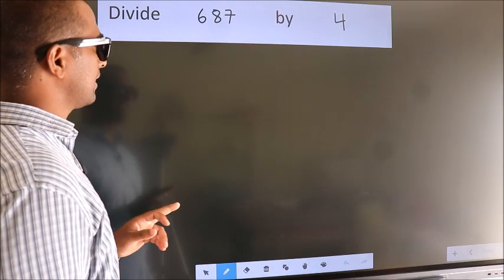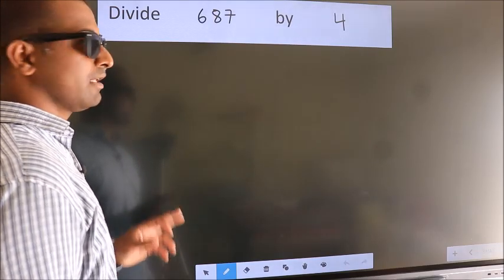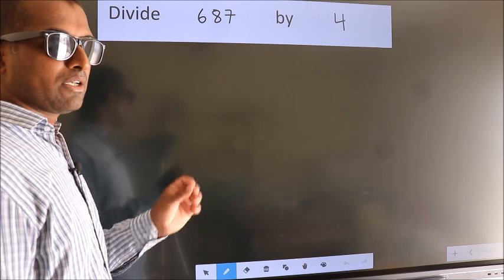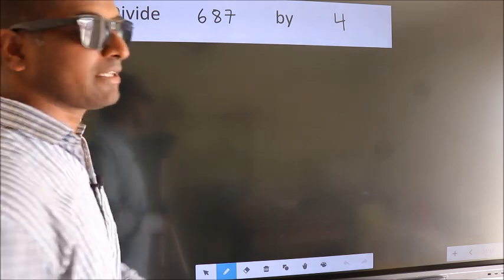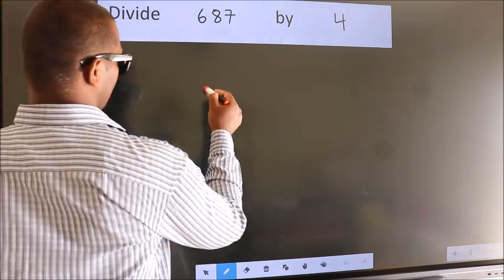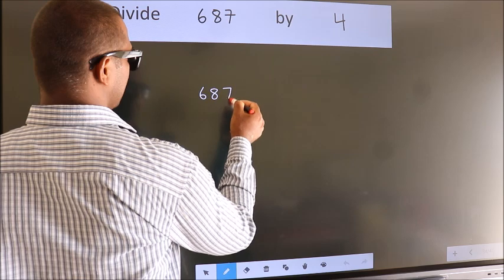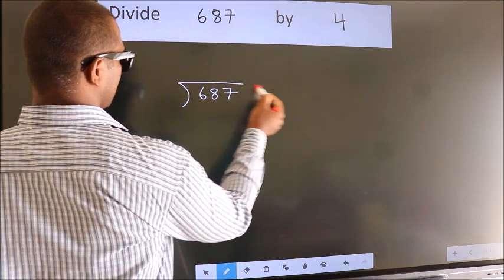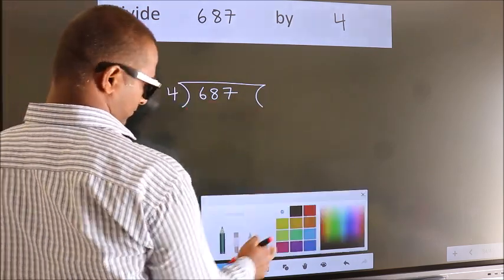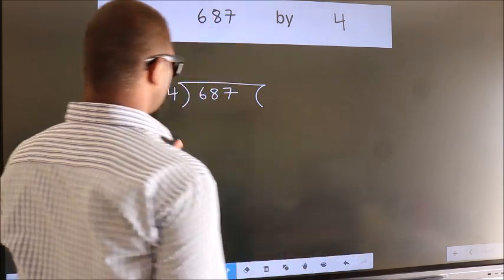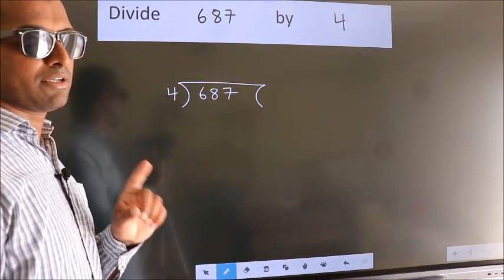Divide 687 by 4. To do this division, we should frame it in this way. 687 here, 4 here. This is your step 1.